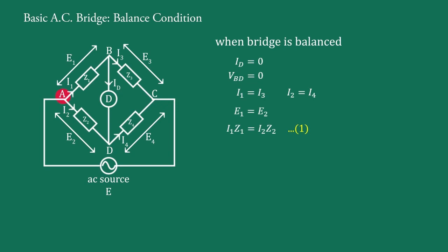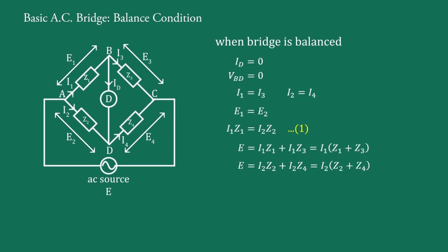The potential between points A and C is E due to the AC source. Since Id = 0, we can write: E = I1·Z1 + I1·Z3, and E = I2·Z2 + I2·Z4. That is, E = I1·(Z1 + Z3) and E = I2·(Z2 + Z4). Hence we can write: I1 = E / (Z1 + Z3) and I2 = E / (Z2 + Z4).